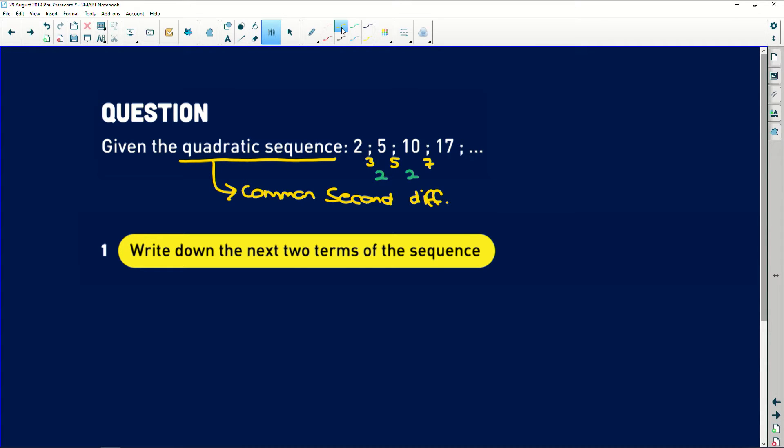So when they say write down the next two terms of the sequence, easy thing that you can do is just keep on writing 2s along here as a common second difference. So what is 7 plus 2? Well, that's going to be 9 there. And 9 plus 2 is going to be 11 over there.